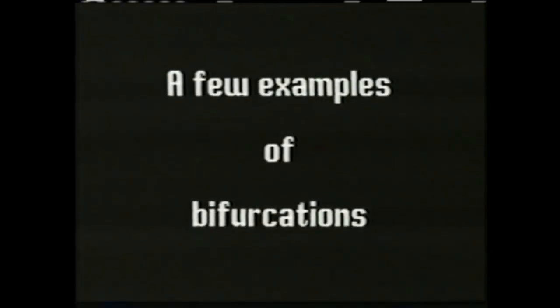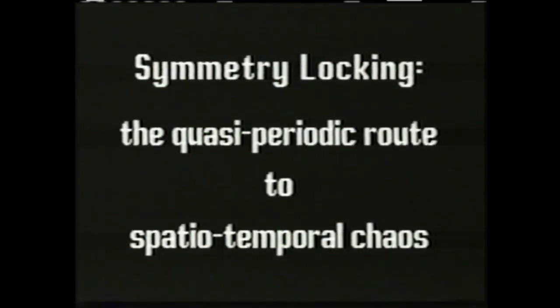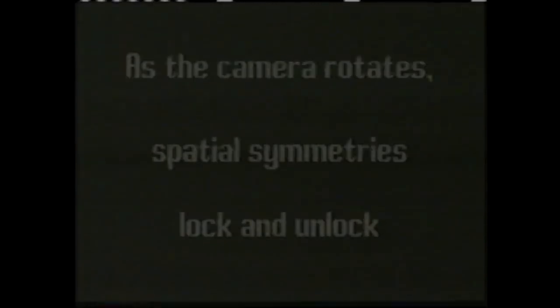The next three sequences examine the effect of a slow change in a parameter on the dynamics. To isolate the effect of camera angle on the overall symmetry of the patterns, the camera is very slowly rotated for approximately five degrees. Additionally, a mask has been placed over the monitor to impose annular boundary conditions. The pattern symmetries lock and unlock as the camera passes through simple rational angles.